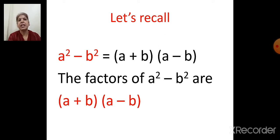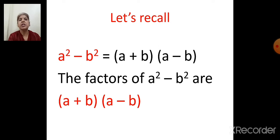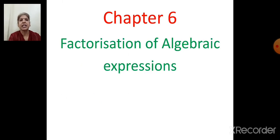We have done this important formula in the previous session: A square minus B square equals A plus B, the whole bracket, multiply by A minus B. A plus B and A minus B are the factors of A square minus B square. Today we will do a new chapter — Chapter 6: Factorization of Algebraic Expressions.